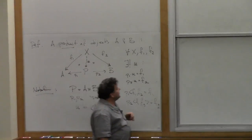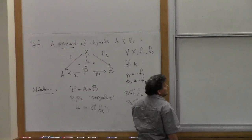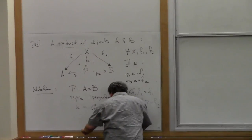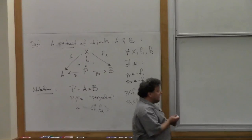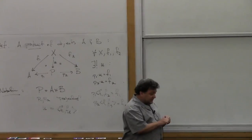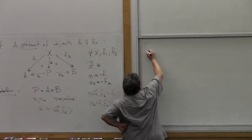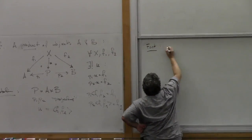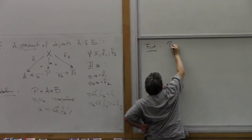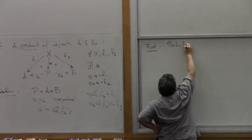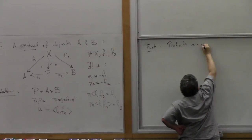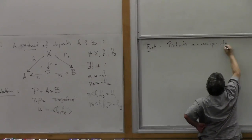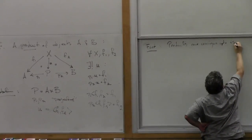Let's have a basic result about products. I said that universal mapping properties determine things uniquely up to isomorphism, so let's just check. In fact, products are unique up to isomorphism.